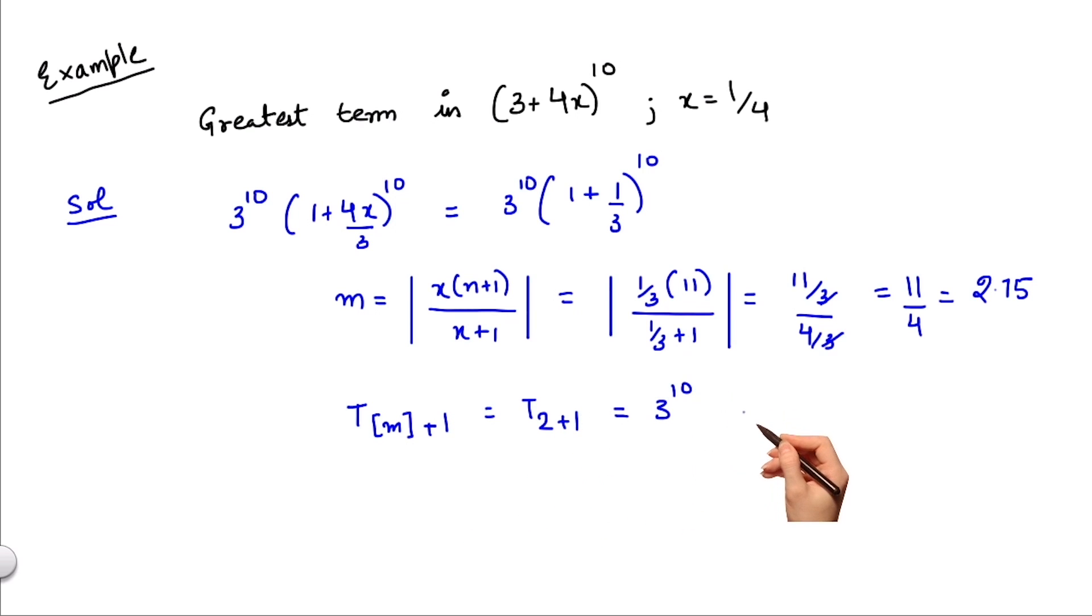Which is given by ⁿCᵣ which is ¹⁰C₂ multiplied by (1/3)^r which is (1/3)². I can solve this further and my answer comes out to be 45 × 3^8.